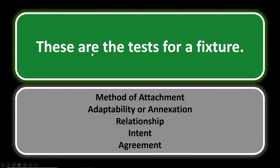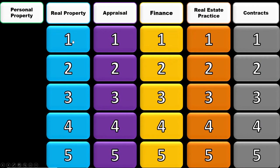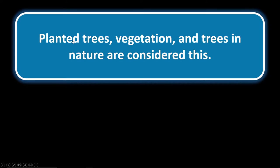Personal property number five: what are the tests for a fixture? The acronym you should think of is MARIA. A fixture is something that would be considered personal property but is treated as real property and goes with the land. MARIA stands for: Method of attachment, Adaptability or Annexation, Relationship, Intent, and Agreement. Note that time, cost, and size are not tests for a fixture.